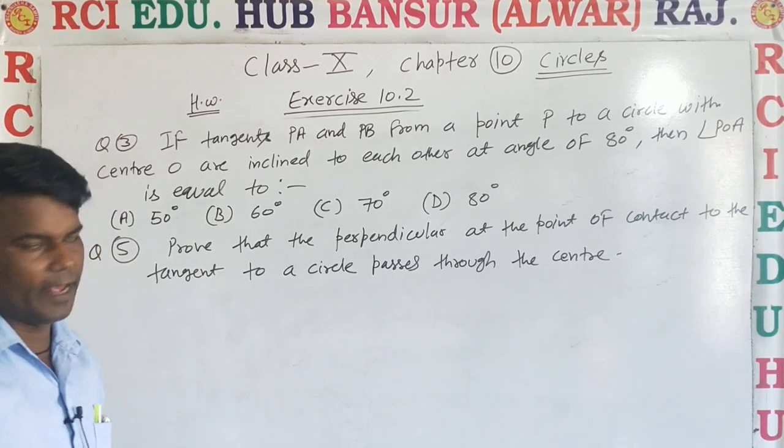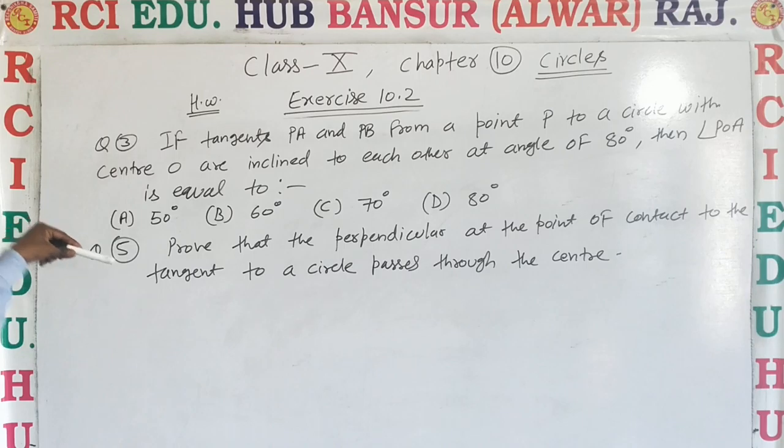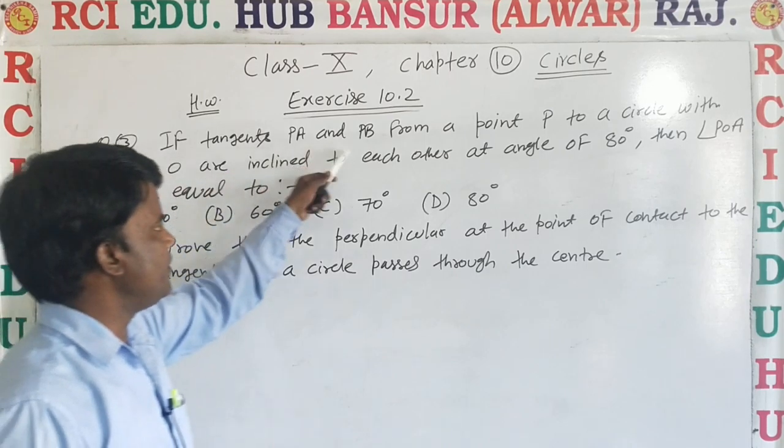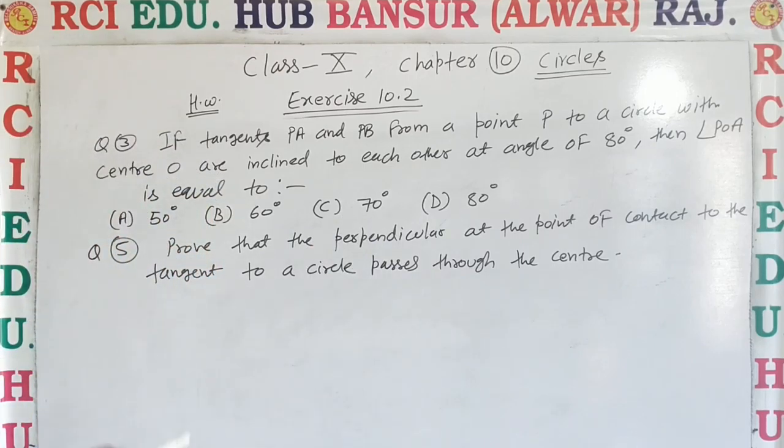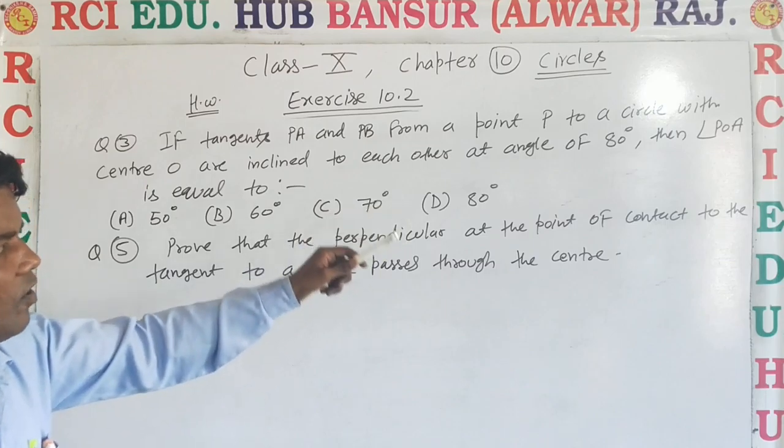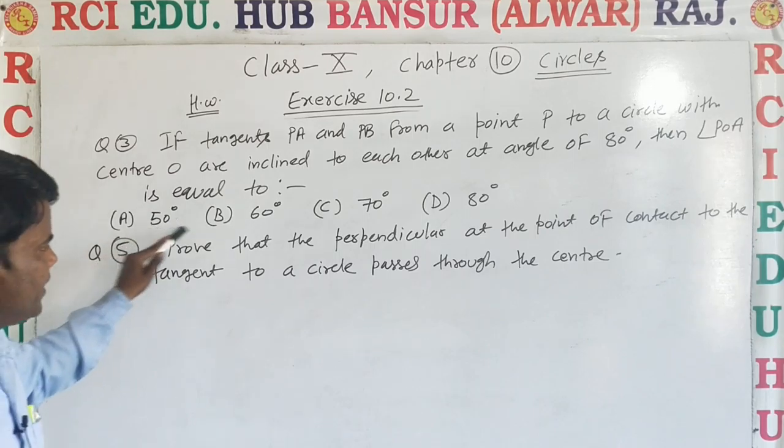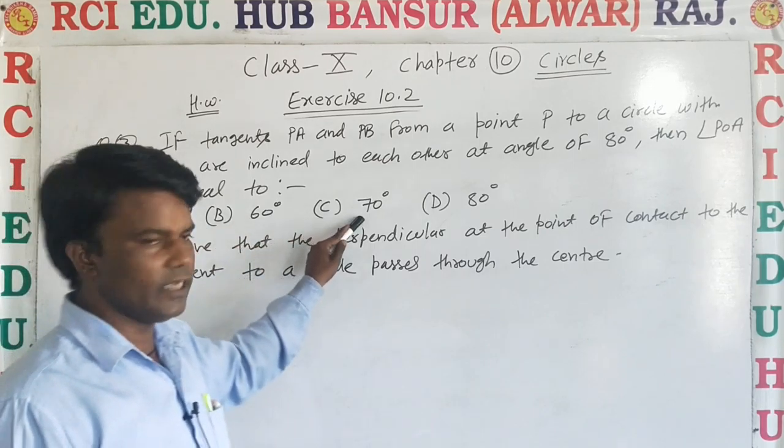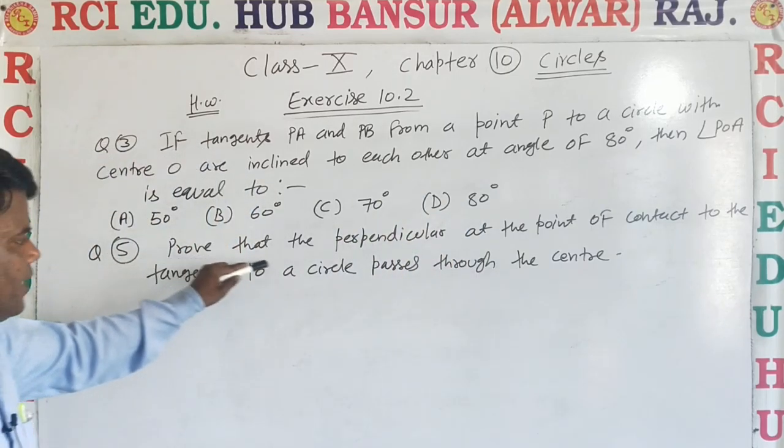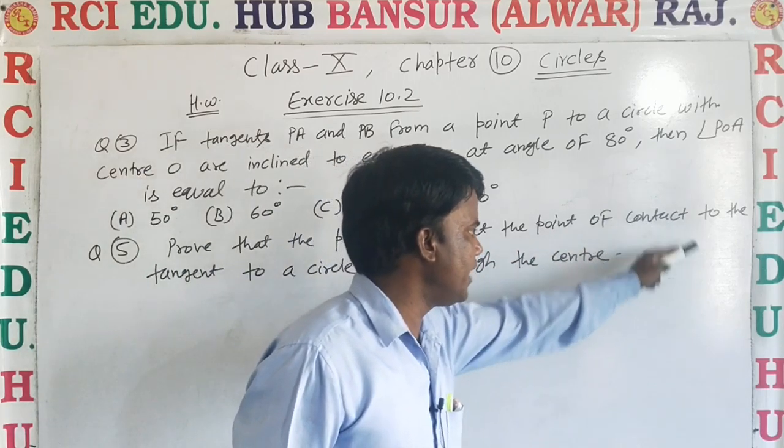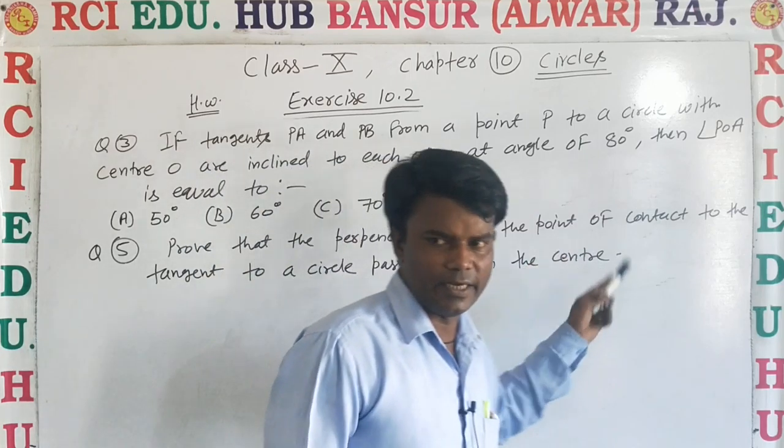Iske baad jo aapka next question aana hai, exercise 10.2 ho gayi. Then angle POA is equal to, A option 50 degree, B 60 degree, C 70 degree, D 80 degree. Next question, question number 5. Prove that the perpendicular at the point of contact to the tangent to a circle passes through the center.